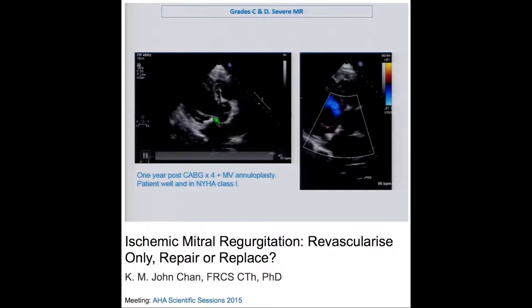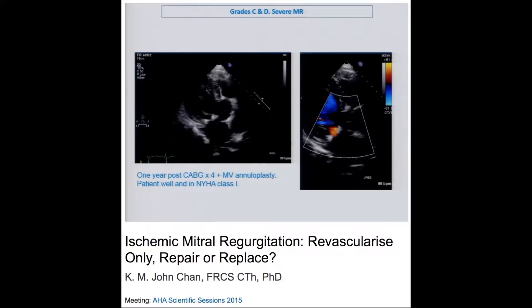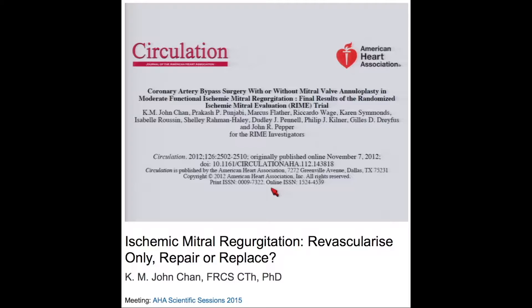This is what this patient had — the ring has been implanted. One year after four CABG grafts and a mitral annuloplasty, he was well in NYHA class 1. This was a randomized controlled trial — the Randomized Ischemic Mitral Evaluation trial, the RIME trial — first presented here three years ago, comparing CABG alone versus CABG plus mitral valve annuloplasty in moderate functional ischemic MR.